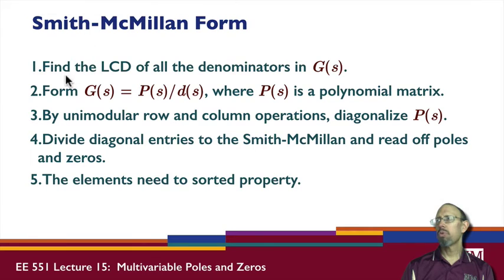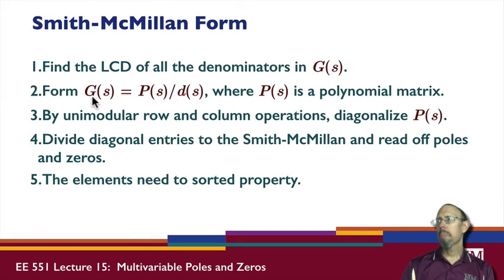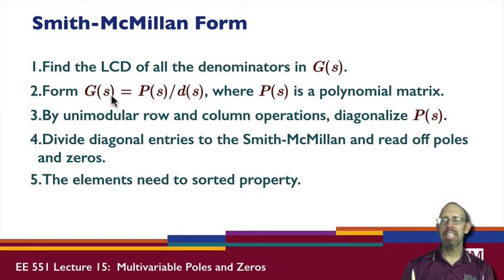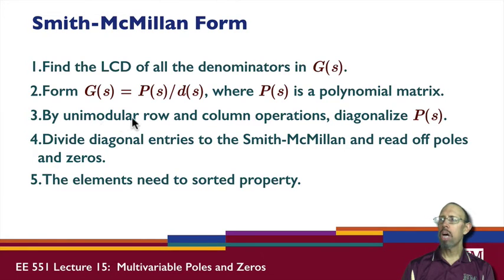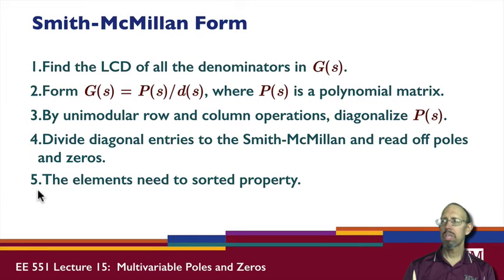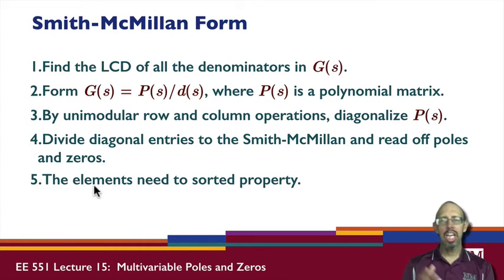To find the Smith-McMillan form, we find the least common denominator of all the denominators within the entire transfer function matrix. Then we form p of S from this expression: G of S equals p of S divided by d of S, so p of S equals G of S times d of S. When we do that, we get a polynomial matrix. By using unimodular row and column operations, we can diagonalize the matrix p of S. Then we divide the diagonal entries to obtain the Smith-McMillan form and read off the poles and zeros.